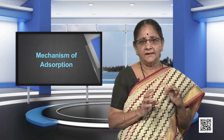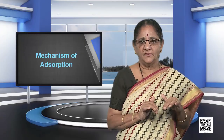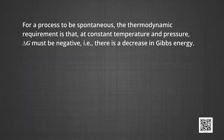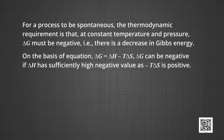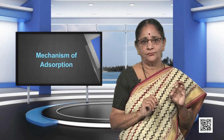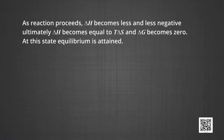Adsorption is accompanied by decrease in both enthalpy and entropy of the system. For a process to be spontaneous, the thermodynamic requirement is that at constant temperature and pressure, delta G must be negative — there must be a decrease in Gibbs free energy. From the equation delta G = delta H − T·delta S, delta G can be negative if delta H has a sufficiently high negative value, since −T·delta S is positive. As adsorption proceeds, delta H becomes less and less negative. Ultimately, delta H equals T·delta S, delta G becomes zero, and equilibrium is attained.